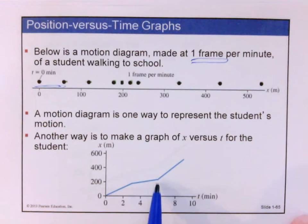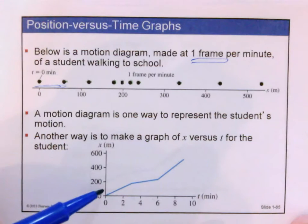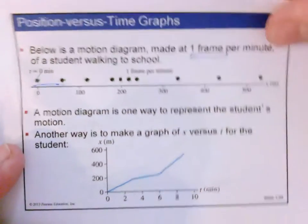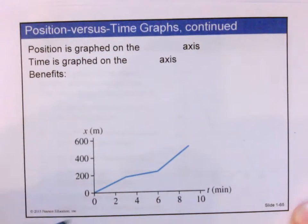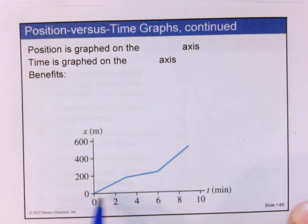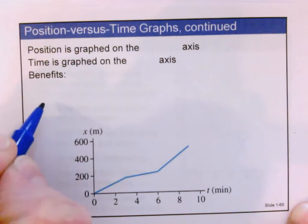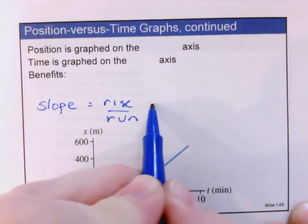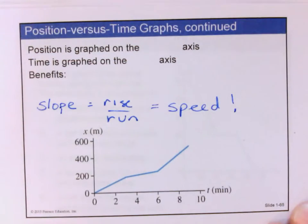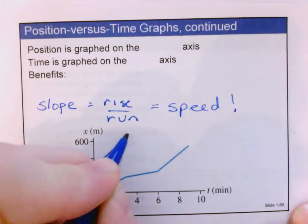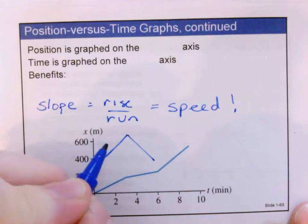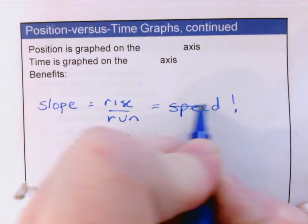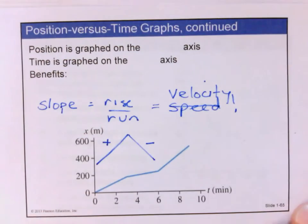This is the same motion as above but in a motion graph. We can see that the student is walking a little less than 200 meters in three minutes, then less than 100 meters in the next three minutes, then maybe 300 meters in the final three minutes. The beauty of a position versus time graph is that we see where the student is by looking at the y-axis and when by looking at the x-axis. Slope, which is rise over run, is the velocity — because we can tell direction. An upward slope is one direction and a downward slope is the opposite direction.